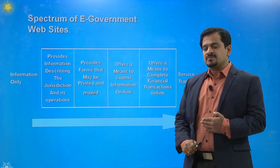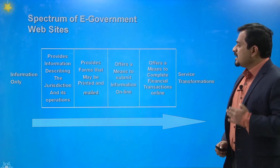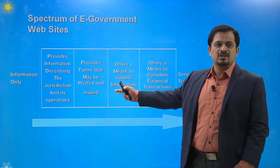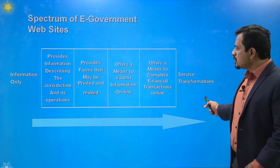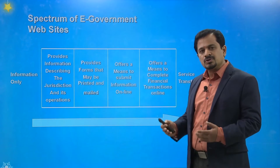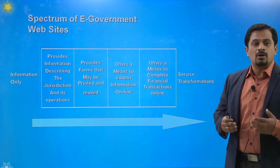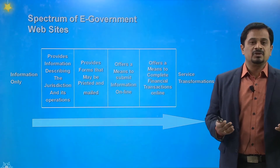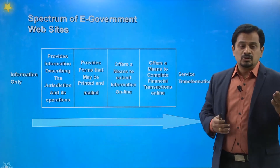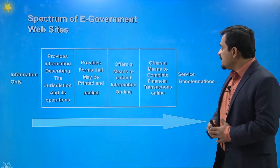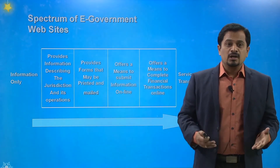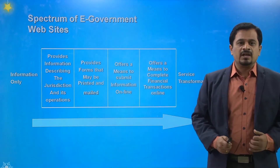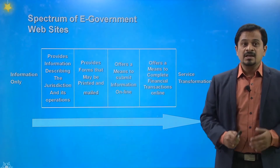This is the spectrum of e-government websites. It provides information, then interactions, as well as information with the judicial part, up to financial transactions. Initially it provides information and describes judicial operations. Then it provides forms that users can print or send via email. The third stage allows submitting information online instead of going to an office. At last, it provides financial transactions for any online services offered by the e-government.